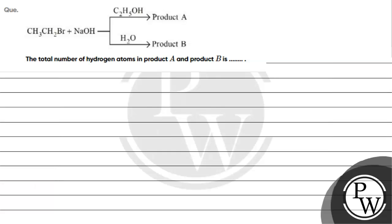Let's read this question. Allyl alkane is given, bromoethane is given. What reaction with NaOH? One time in an alcoholic medium, one time in aqueous medium. So, product A and product B. What will be the total number of hydrogen atoms in product A and product B?